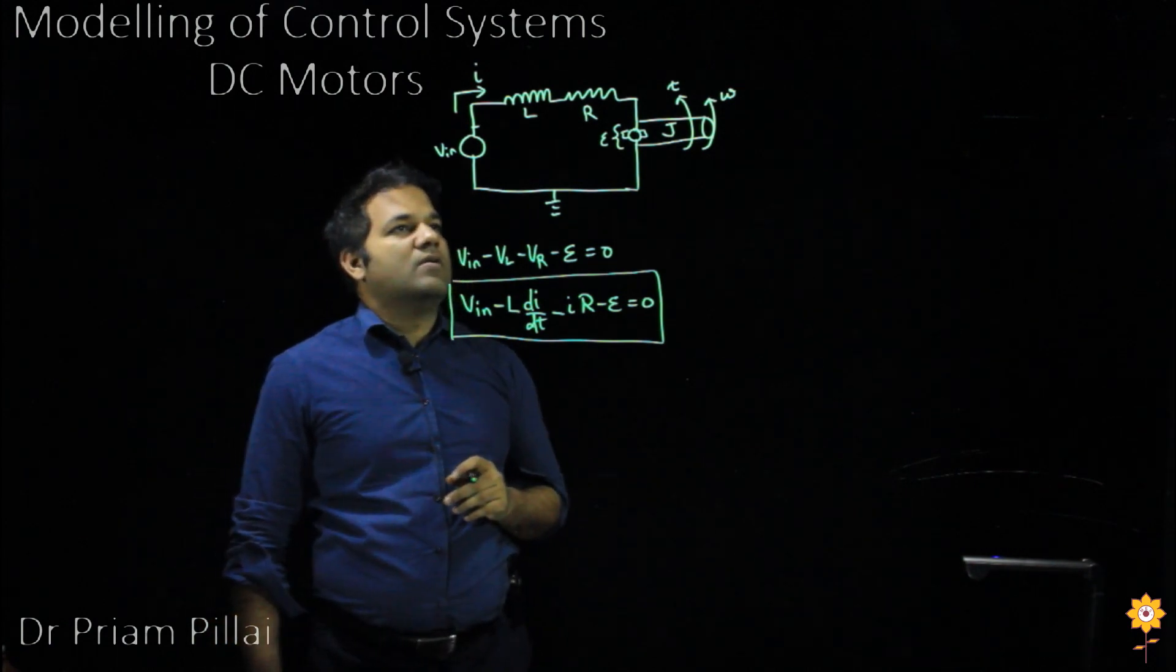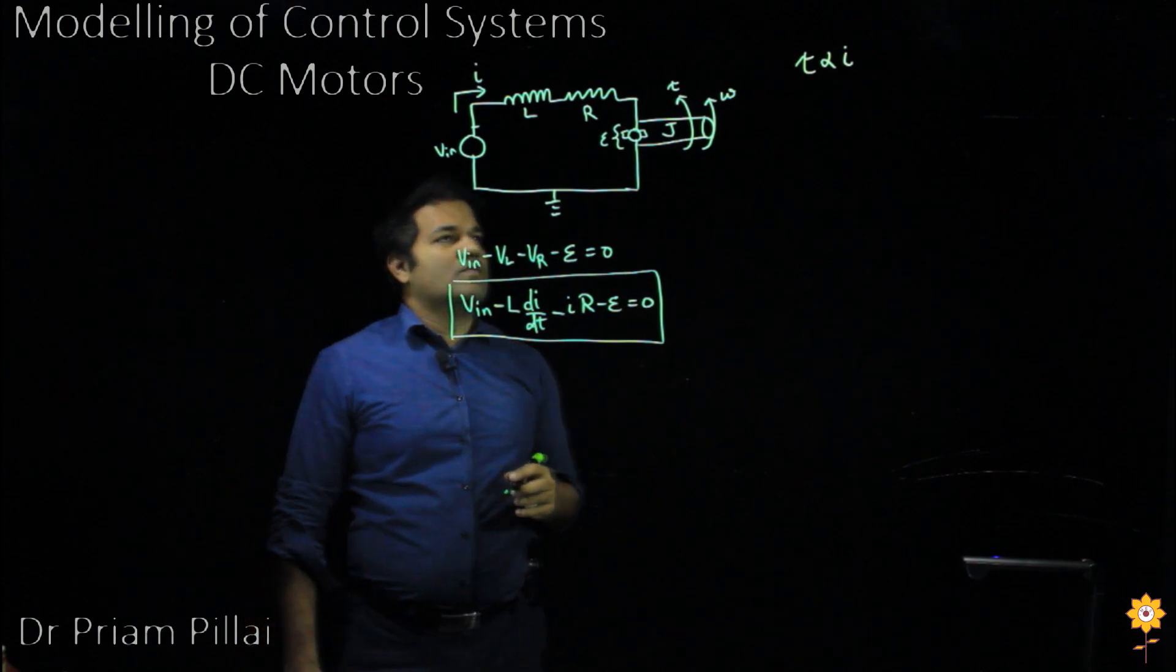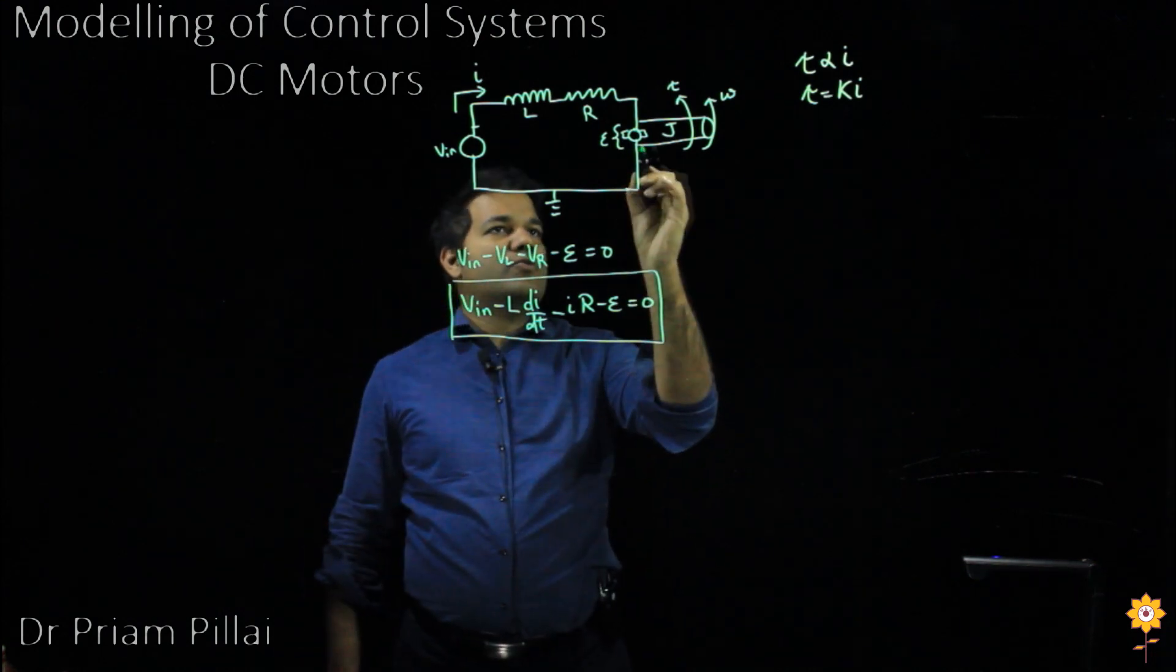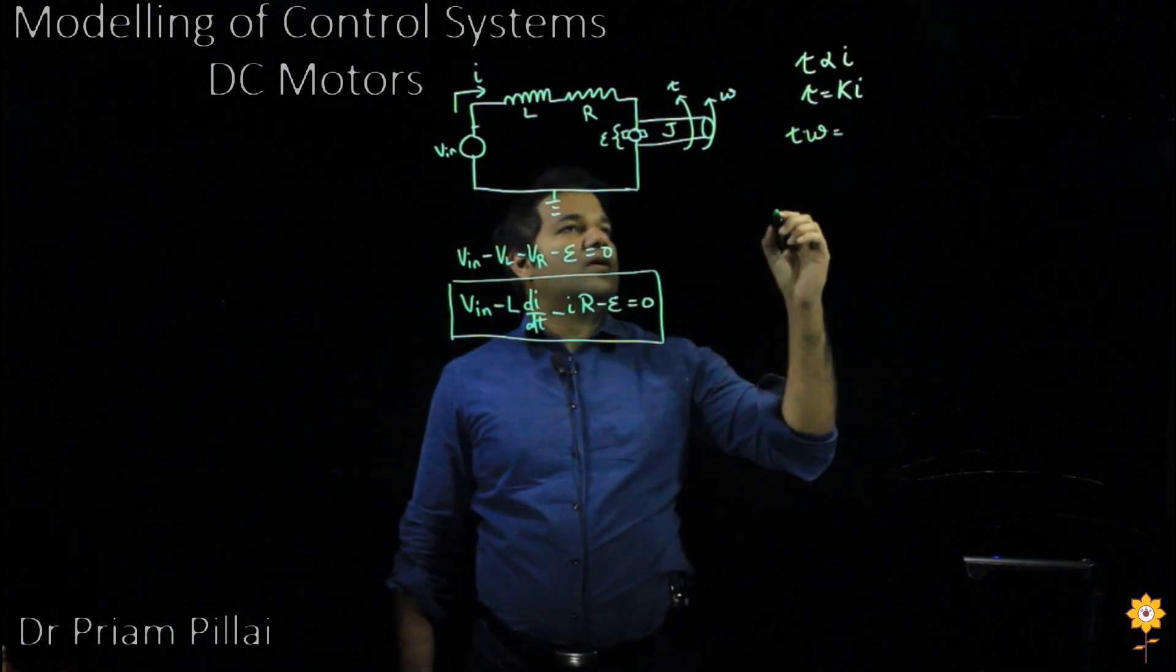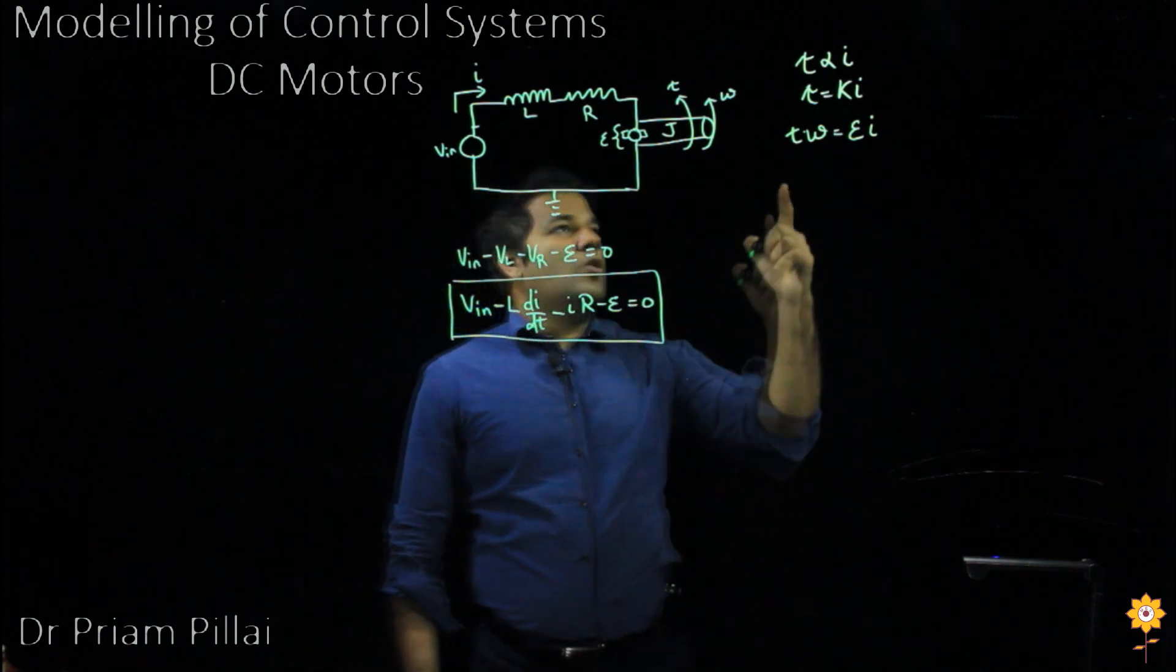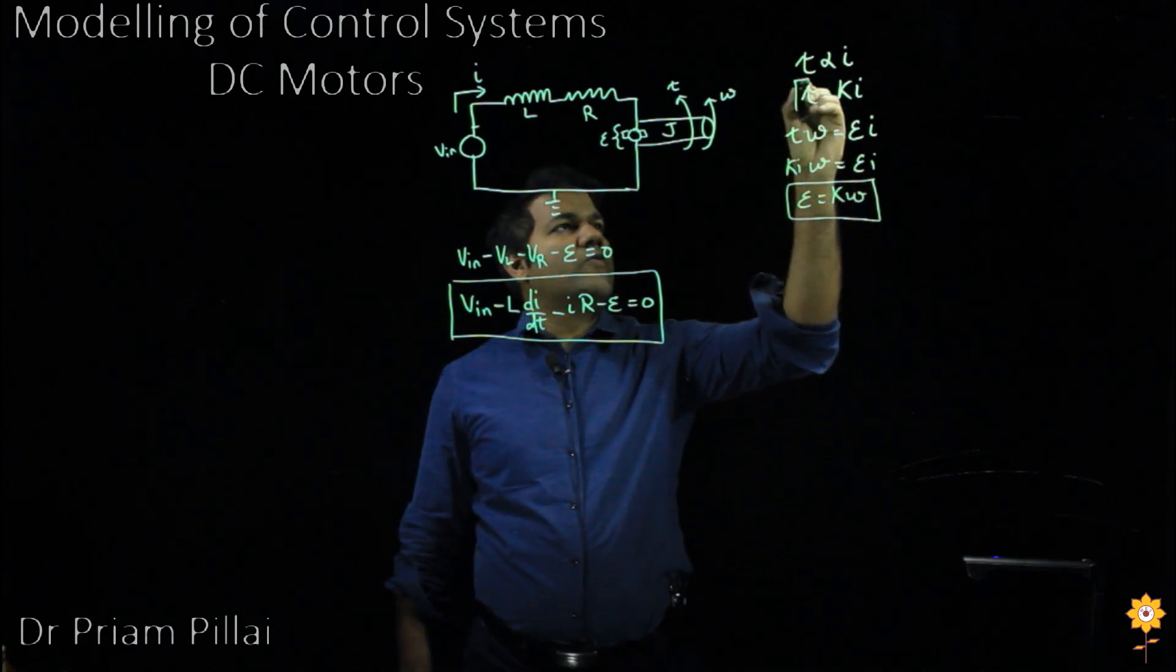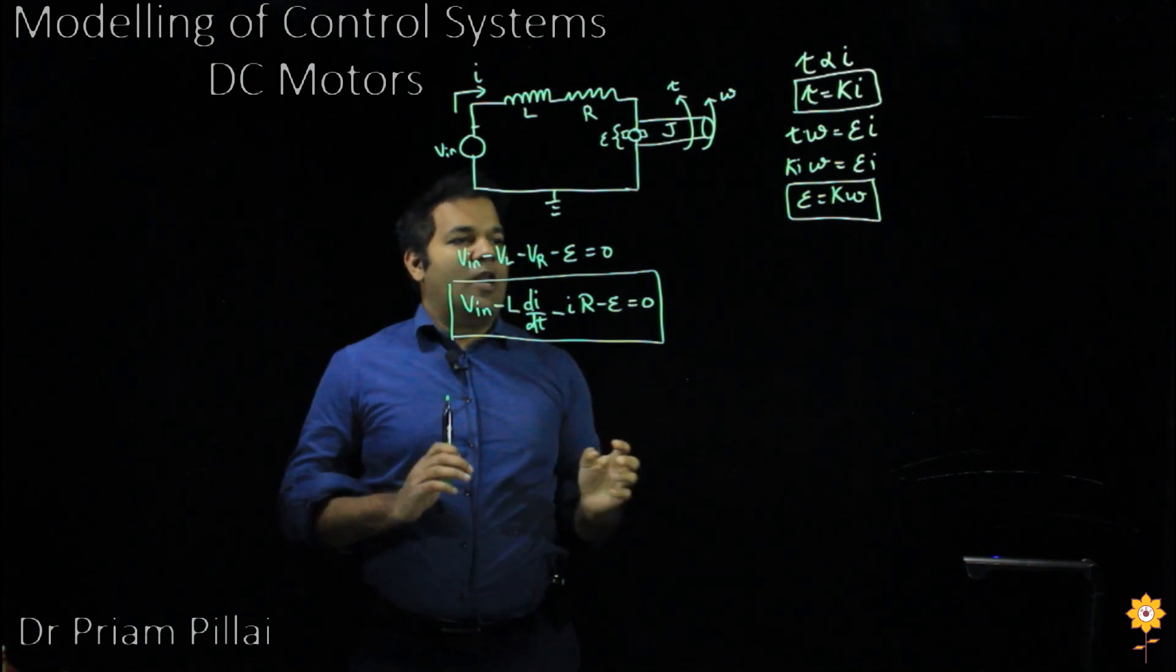Another thing to note about a DC motor is that the torque is going to be proportional to the current. Now the torque will equal K times the current, where K is something that we call the motor constant. If power is conserved across this motor, then the torque multiplied by the angular velocity would equal the voltage epsilon multiplied by the current I. Since torque is given by Ki, then Ki times omega equals epsilon I, so epsilon would equal K omega. These two equations give us a way that we can go between the electrical domain and the mechanical domain, and it will help us generate our system of equations.